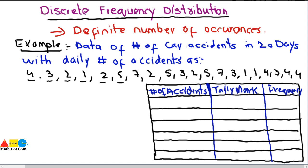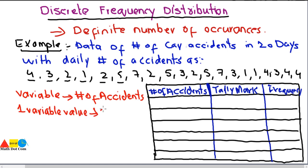First, identify the variable. Here the variable is the number of accidents. Keep in mind that when making a discrete frequency distribution table, one variable value will represent one class. So one variable value equals one class, and it should not be repeated — if we have multiple fours in the data, we consider it as one class.